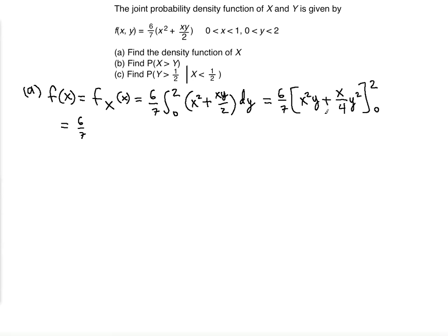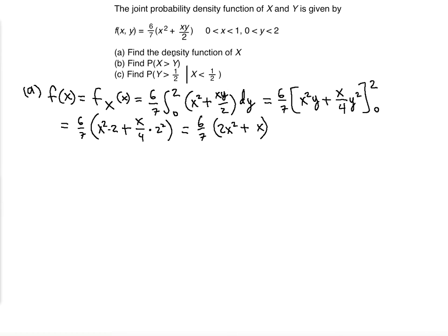Luckily, the lower limit is 0 so we only need to evaluate at y = 2. We get x² × 2 for the first term, plus (x/4) × 2² = (x/4) × 4 = x for the second term. So we get (6/7)(2x² + x). This is the marginal density function of x.